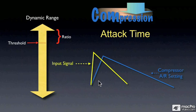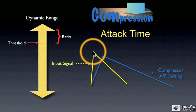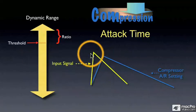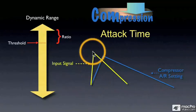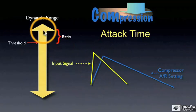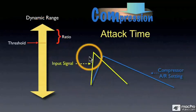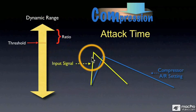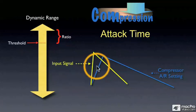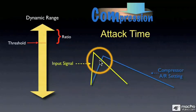So, this part of our signal that is above the threshold will pass through the compressor unaffected. But as the attack of the compressor kicks in,